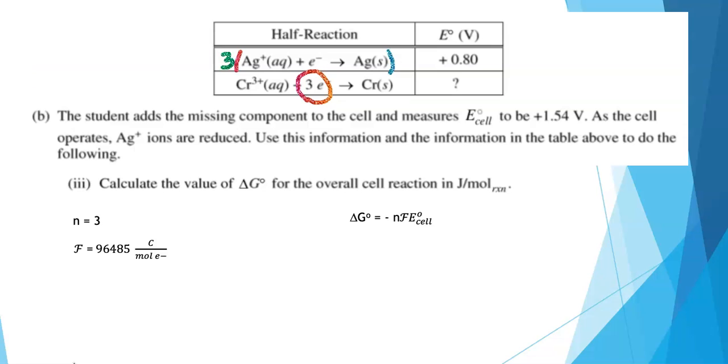That's the number of electrons transferred. F is the Faraday, 96,485 coulombs per mole of electrons. And E_cell was given as 1.54 volts. I want to remind you that volts are defined as joules over coulombs. Sometimes it's helpful to think about what the units involve. So we can substitute and evaluate. ΔG = -3 electrons × 96,485 C/mol e⁻ × 1.54 J/C. And we get an answer of -44,600 joules per mole.